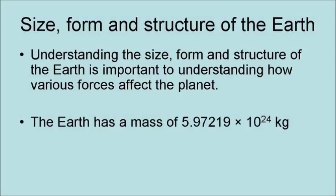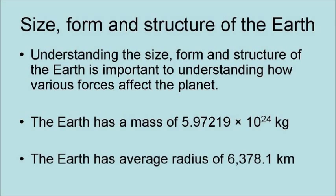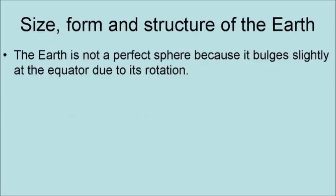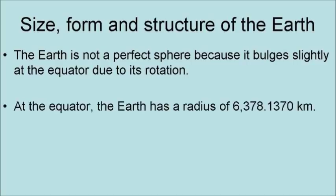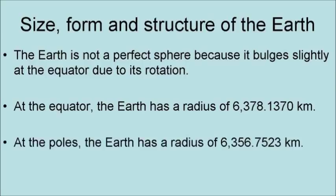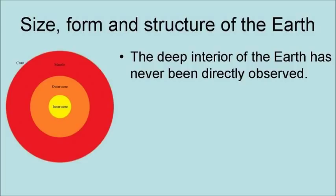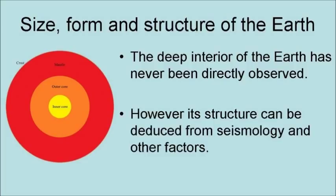The Earth has a mass of about 5.97219 times 10 to the 24th power kilograms and an average radius of about 6,378.1 kilometers. The Earth is not a perfect sphere because it bulges slightly at the equator due to its rotation. At the equator, the Earth has a radius of 6,378.137 kilometers, and at the poles, a radius of 6,356.7523 kilometers. The deep interior of the Earth has never been directly observed; however, its structure can be deduced from seismology and other factors.